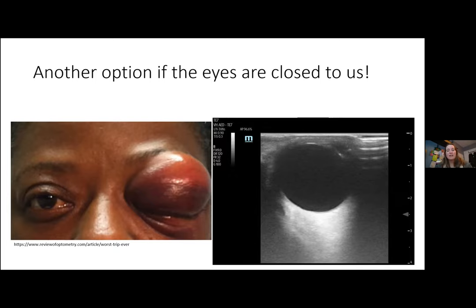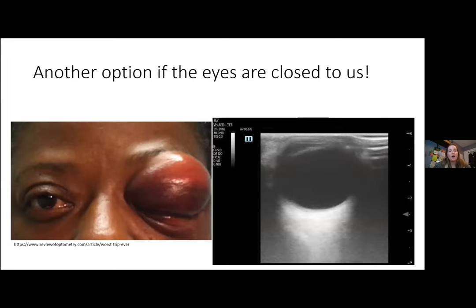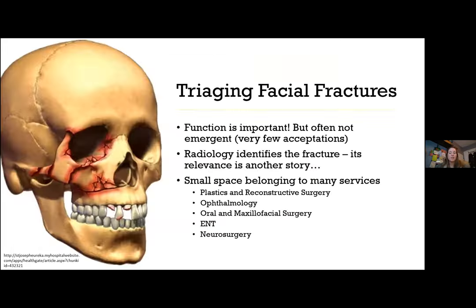While awaiting facial CT, POCUS can assess extraocular movements for entrapment — if intact and pain-free, entrapment is very unlikely. Facial function is the most important predictor of whether a facial fracture is operative, followed by cosmesis. Function includes eating (impacted by malocclusion, trismus, and dentition), breathing (nasal structure and soft tissue), and vision (orbit shape and ability to support muscle and soft tissue).